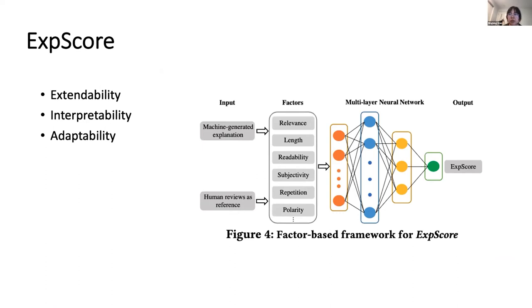The figure shows the overview structure of our factor-based framework for ExpScore. The input is machine-generated explanation and the human review as reference. First, we compute the factors and feed the factors into the neural network, and output of the neural network is our ExpScore. The key idea of our evaluation framework is to learn a unified evaluation model that aggregates the scores of an explanation on various expected factors. We value our work's attributes of extendability, interpretability, and adaptability. We think any single factor is insufficient to measure the explanation quality comprehensively because each factor can only evaluate one particular perspective. Therefore, our factor-based framework aims to gather the strength of multiple factors and generate high-quality ExpScores for the explanation. Moreover, our framework also leaves space for additional factors, discoveries, and improvement in the future.